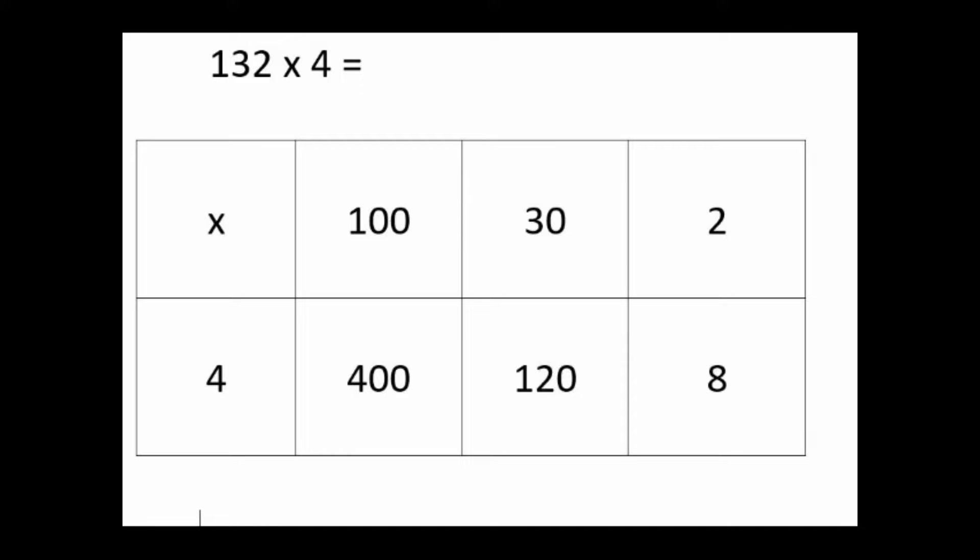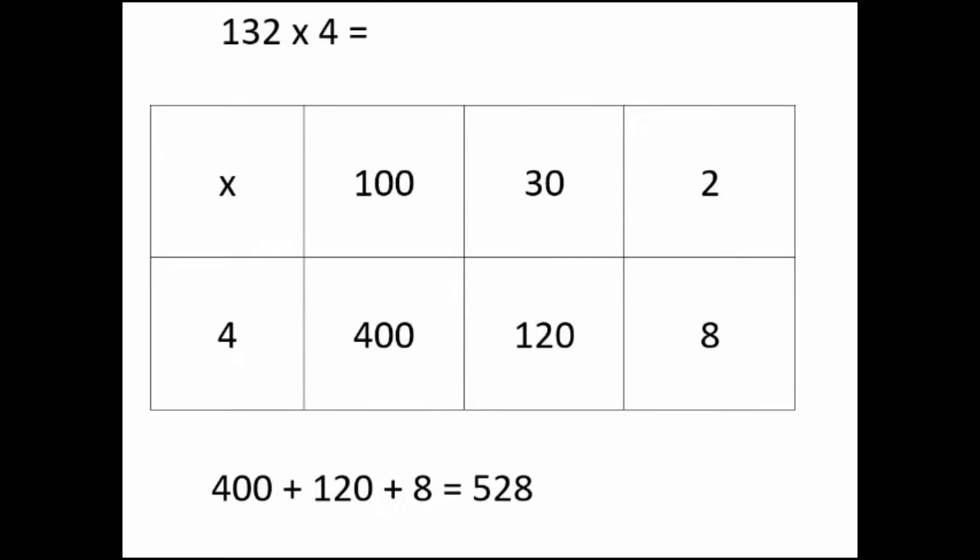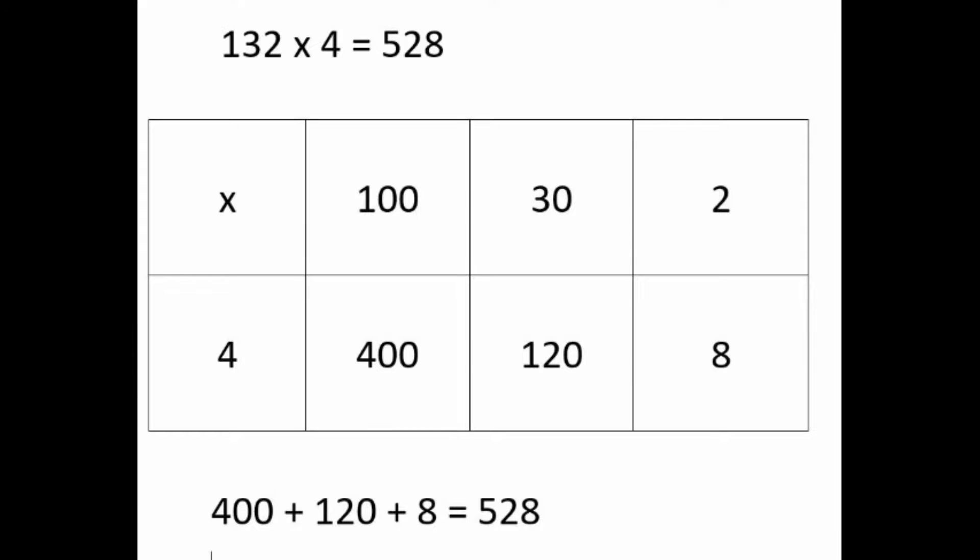So 4 times 100 is 400, 4 times 30 is 120 and 4 times 2 is 8. Now add them all together. Pause the video while you do this. So 400 plus 120 makes 520, add 8 more is 528. And write your answer. Remember to write it where the question is, otherwise you simply won't get it right.